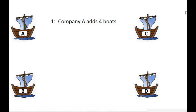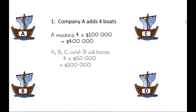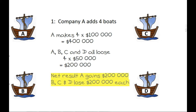The first question: what if Company A adds four boats? Well, Company A will make $400,000. However, there is a $200,000 cost for the extra effort it takes to catch the remaining fish. The net result: A gains $200,000, but B, C, and D each lose $200,000, and the net result for society is a loss of $400,000.